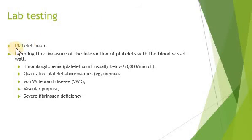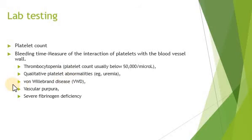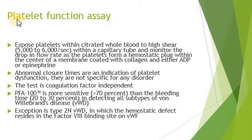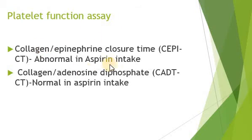For diagnosis, one must determine the platelet count and bleeding time — the time from the start of bleeding from rupture of the fingertip to disappearance of blood on filter paper. Thrombocytopenia is usually reflected in platelet deficiency. There may be qualitative platelet abnormalities, von Willebrand disease, vascular purpura, or severe fibrinogen deficiency. The platelet function assay exposes platelets to high shear within a capillary tube and monitors the drop in flow rate as platelets form a plug; this is independent of coagulation factors.